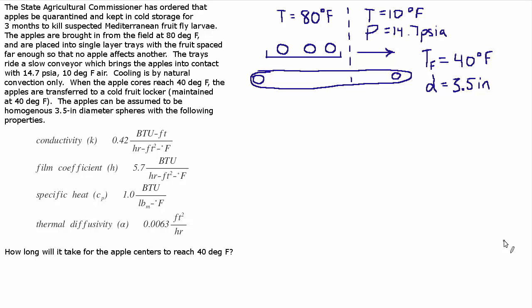I have drawn a little picture, my conveyor belt here, to frame out what's going on. We have these apples in the field at 80 degrees Fahrenheit and they want to get them down to 40 degrees by exposing them to 10 degree air. Once the cores hit 40 degrees at the center, they're cool enough and they're transferred to a 40 degree cold fruit locker.